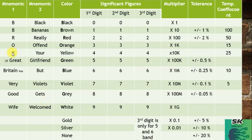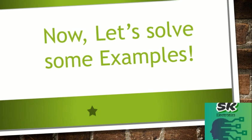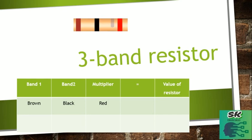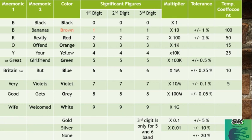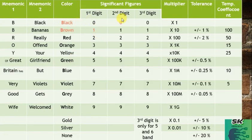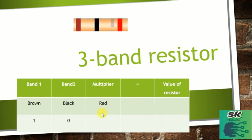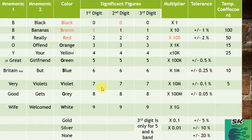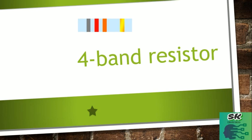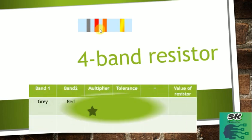Now let us solve some examples. The first example is a three-band resistor. The colors are brown, black, and red. Brown in the first digit column is 1, black in the second digit column is 0, and red as the multiplier is 100. The value becomes 10 × 100 = 1 kilo-ohm. Now for the four-band resistor, the colors are gray, red, orange, and gold.